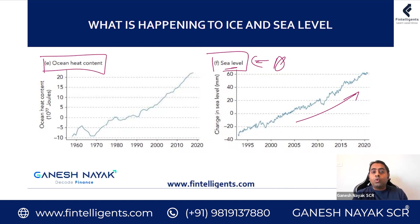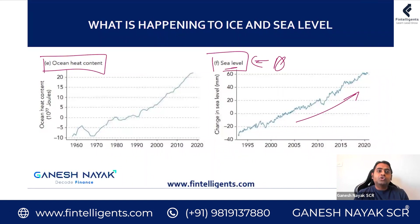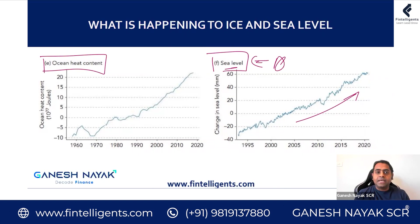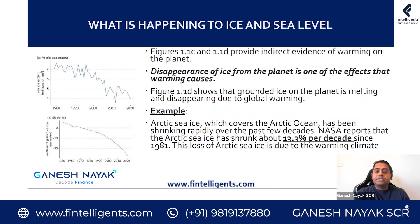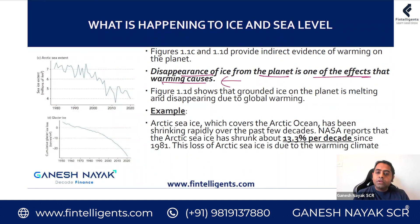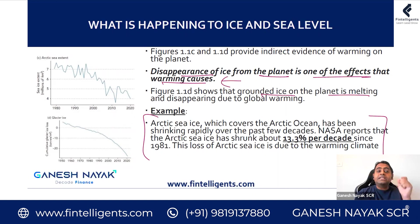Now, ocean heat content — what is the logic here? When we look at the ocean, how much heat is it retaining on average, and why are we concerned? Because when water is heated, its density decreases and it spreads. So one of the reasons for the increase in sea level is because the ocean is getting heated. Disappearance of ice from the planet is one effect that warming has caused. The ground ice on the planet is melting, and NASA has explicitly highlighted that the Arctic sea ice has shrunk by 13.3% per decade, with the primary cause being warming.